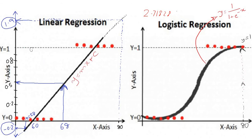With logistic regression, no matter what the outlier is, the predicted y value will always be between 0 and 1. The range of y is between 0 and 1, and the range of x is between minus infinity to plus infinity. The curve goes asymptotically — it will never touch y = 1 or y = 0.